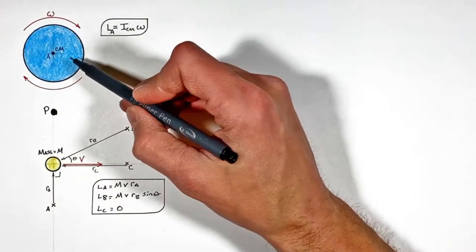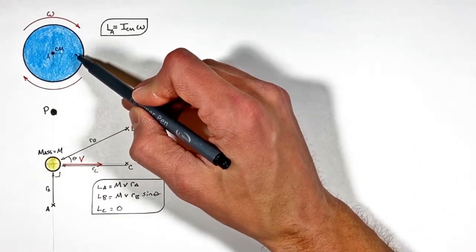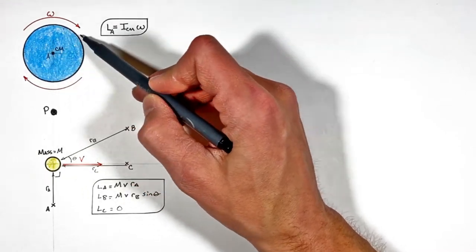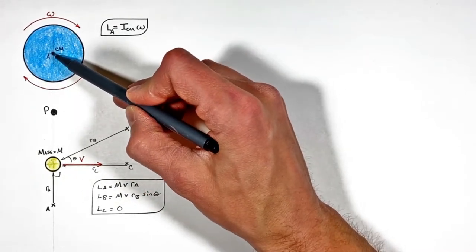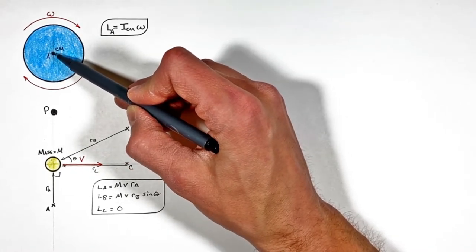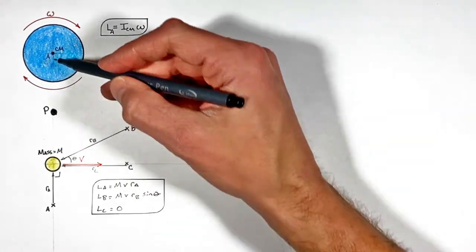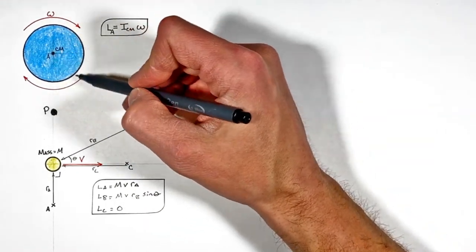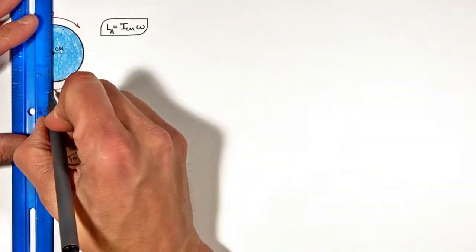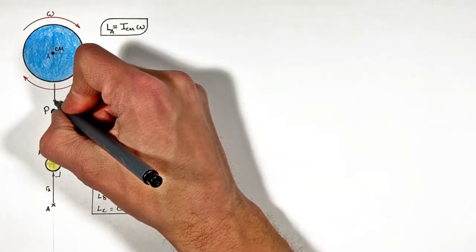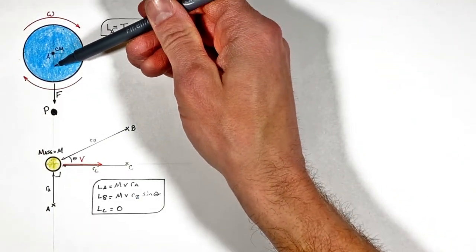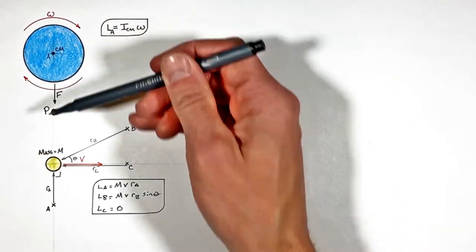I'm going to answer this question in two ways, the first being conceptually. If this disk is rotating, we know it has some inertia and some angular velocity around this axis of rotation, and so we can find the angular momentum around A pretty simply. Now imagine we were to take this rotating disk and, while it's rotating, push it downward. This force acting downward would push this axis of rotation down towards P.